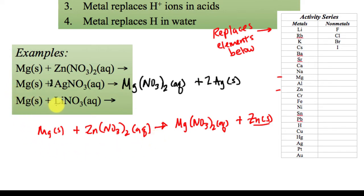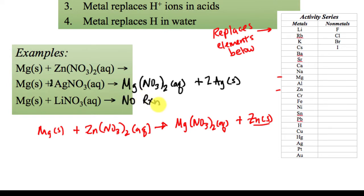The last one: magnesium is going to attempt to replace the cation, which would be lithium. Magnesium is below lithium on the activity series, so magnesium cannot replace the lithium — this would be no reaction. Metals below the other metal cannot replace it. That's metals replacing cations.